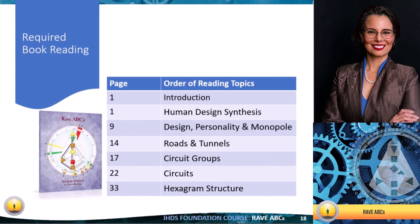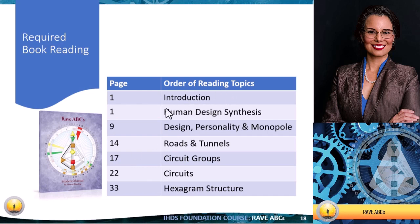You can get a connection chart analysis, cycles analysis, or incarnation cross analysis from any certified IHDS analyst. There are some requirements to continue beyond today — we're going to start in two weeks and there is required reading to get the most out of our live classes. This is the Rave ABCs student manual; when you sign up we'll send you the link. The reading topics include: human design synthesis, design personality and monopole, crystals of consciousness, roads and tunnels on page 14, circuit groups on page 17, circuits on page 22, and hexagram structure on page 33.